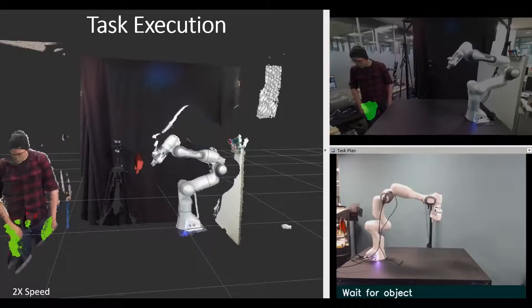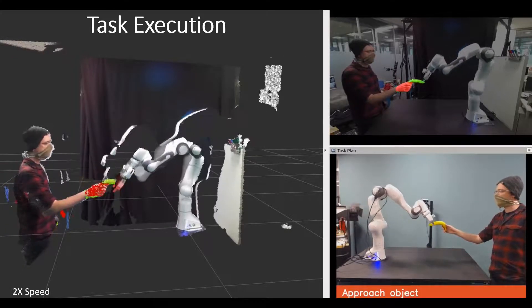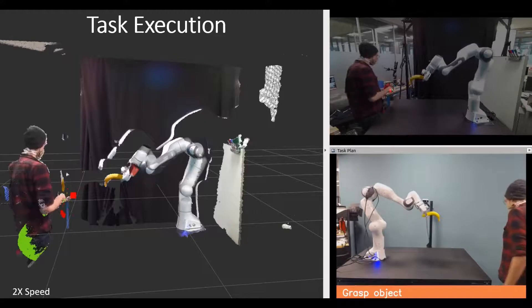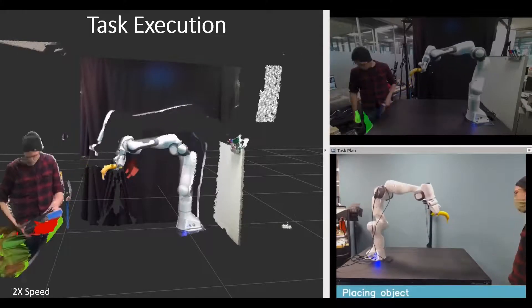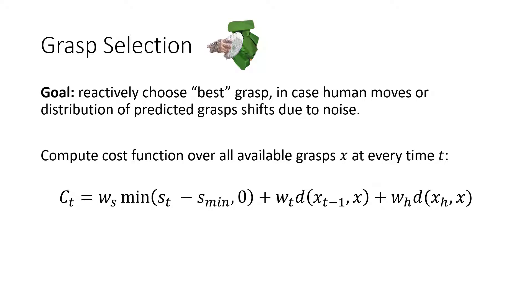This is an example of the full system running. We can see both the view of the robot and with all predicted grasps, as well as the chosen grasps selected, and the segmentation and which step the robot is executing. Grasp selection is of special note. Our goal is to reactively choose the best grasp in case the human moves, the object moves, or the distribution of predicted grasp shifts.